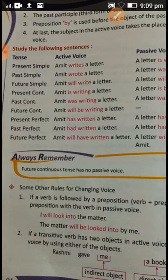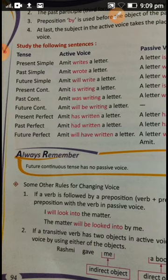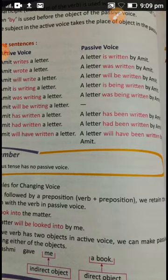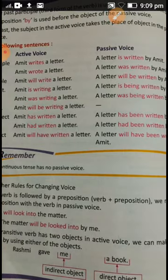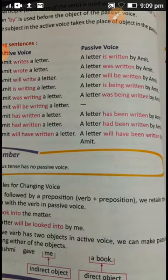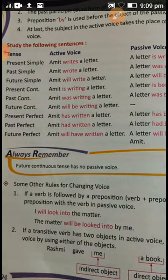For present perfect — 'Amit has written a letter' — the passive adds 'has been': 'A letter has been written by Amit.' For past perfect — 'Amit had written a letter' — it becomes: 'A letter had been written by Amit.' For future perfect — 'Amit will have written a letter' — it becomes: 'A letter will have been written by Amit.' Likewise we complete all these tense forms.